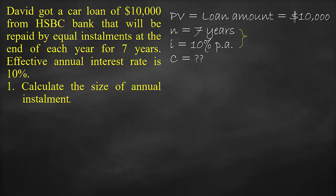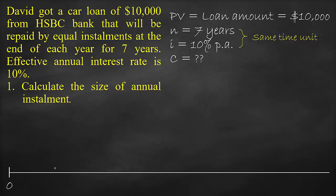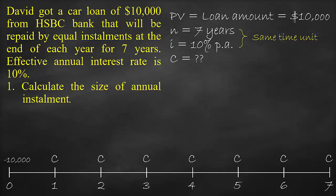Note that the interest rate and time must have the same time unit. In this example, both interest and the number of periods are in years. Let's begin by drawing the timeline from the bank's perspective. We start with year 0, then 1, 2, 3, and so on until 7. At year 0 the bank provides a loan of $10,000, which is a cash outflow. The bank then receives a periodic instalment C every year, which is a cash inflow. Loan amortisation is an example of the present value of an ordinary annuity.